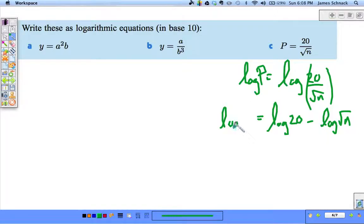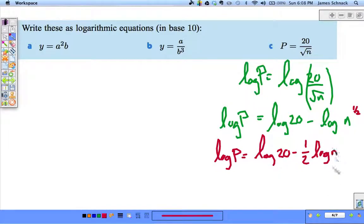So log 20 minus log squared of n. And how many of you stopped here? Hopefully nobody's raising their hand. You'd look silly if you are first off, but hopefully you recognize that we're not done. The square root of n is just n to the 1 half. So we can go one step further in expanding this log p equals log 20 minus 1 half log n.